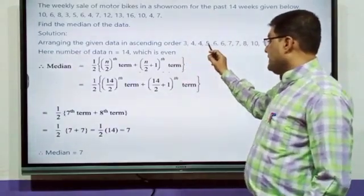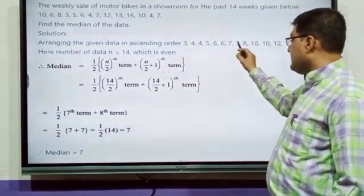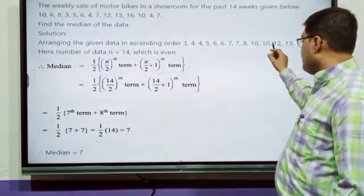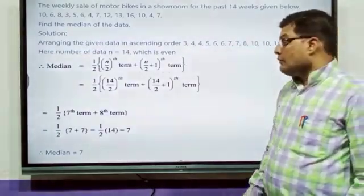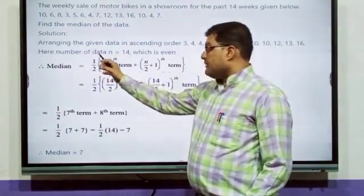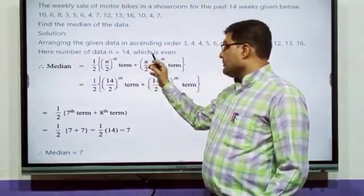1, 2, 3, 4, 5, 6, 7, 8, 9, 10, 11, 12, 13, 14. How many observations are there? 14. So, here number of data n = 14, which is even number.